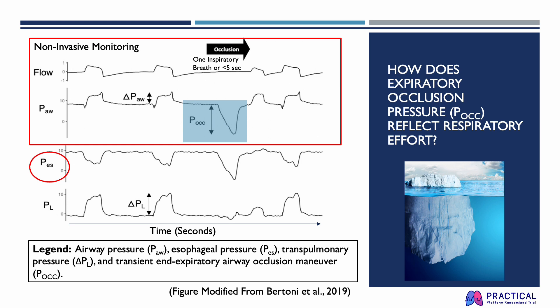Because a single expiratory occlusion does not affect the respiratory drive or the extent of diaphragm activation, PEOC can be used to estimate the pressure generated by the respiratory muscles during assisted unoccluded breaths. To avoid excessive or insufficient effort and excessive lung distending pressures, PEOC should generally be between minus 20 to minus 5 centimeters of water, but these values are currently still being studied.